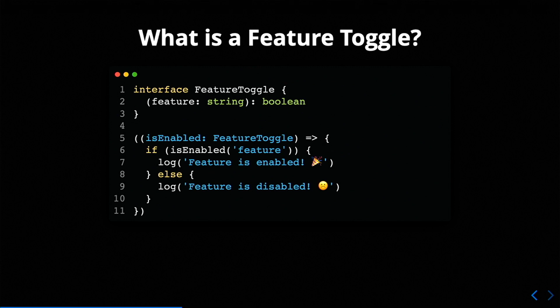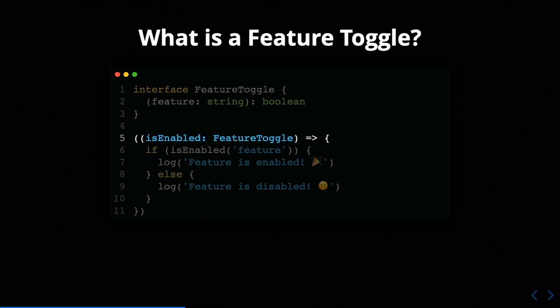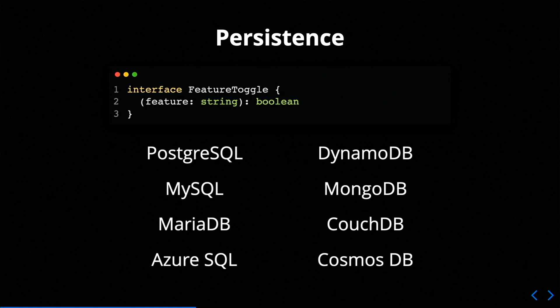Here's some code that is a feature toggle — this is TypeScript. We have this function here; we can ask for a feature by name and this function will tell us whether that feature is enabled or not. We wrap it in a functional interface called feature toggle, and we can use that to run one branch of code or another. The problem is we don't know what happens when this code runs because what we don't have here is an implementation — all we have are interfaces.